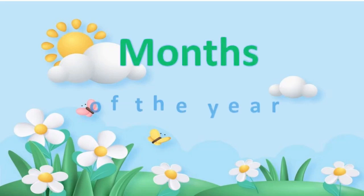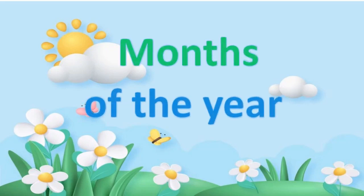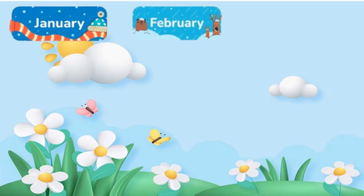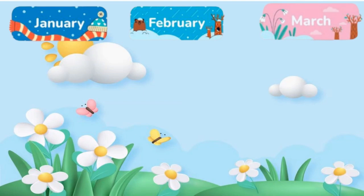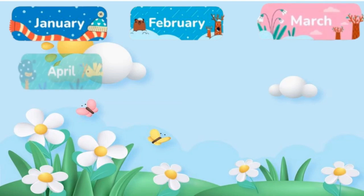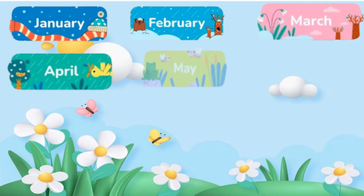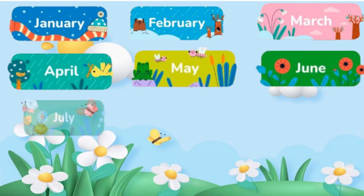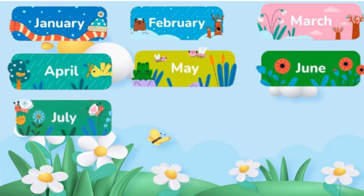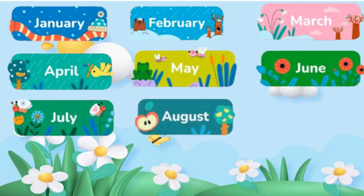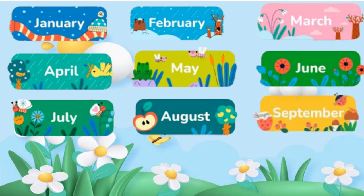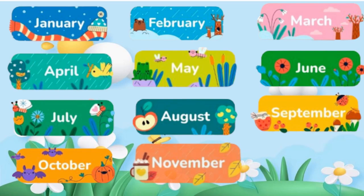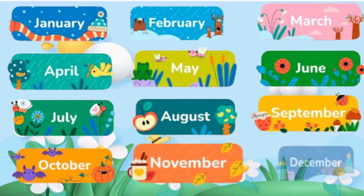Months of the Year: January, February, March, April, May, June, July, August, September, October, November, December.